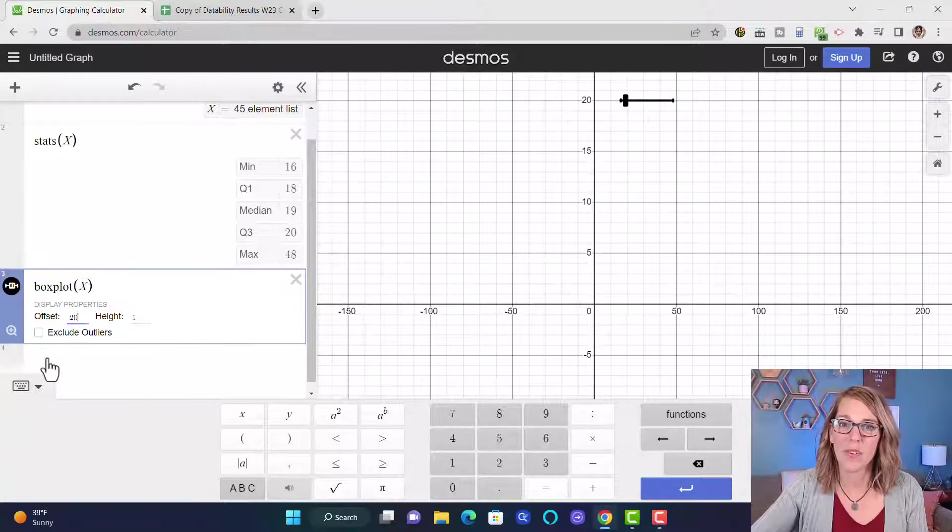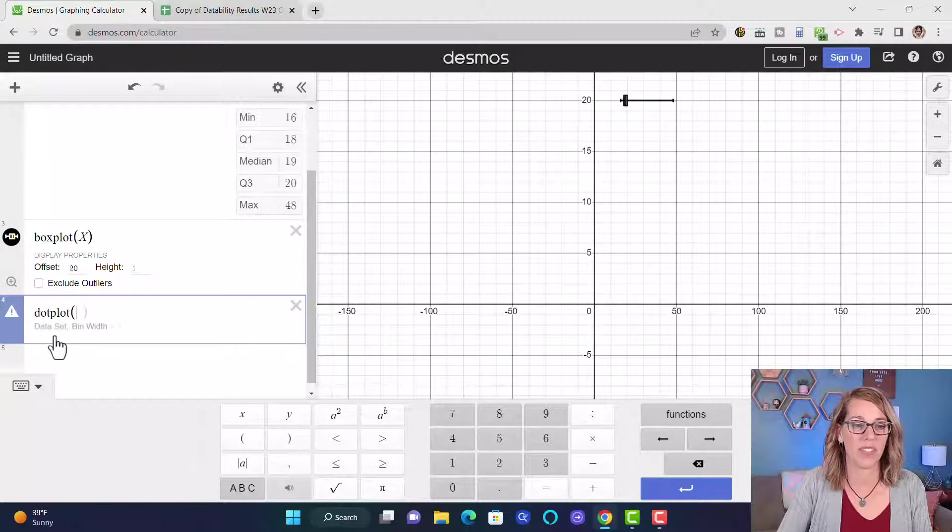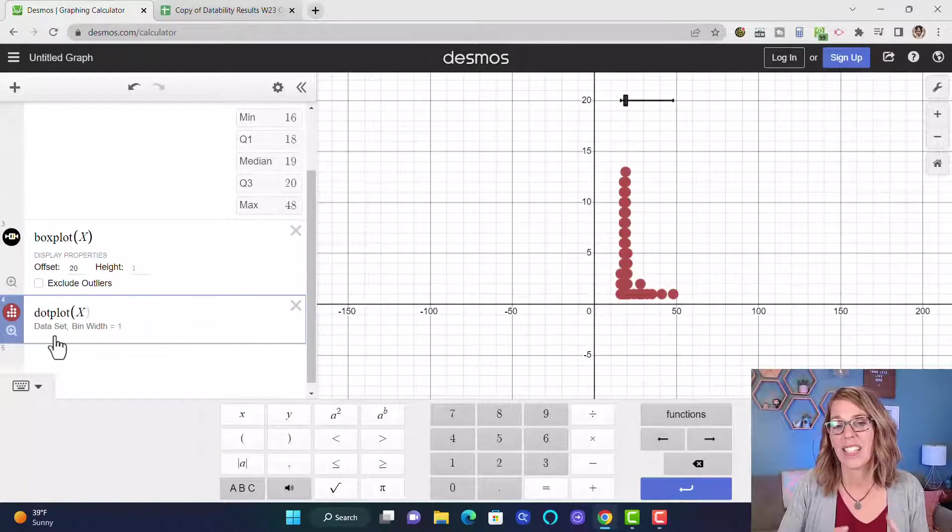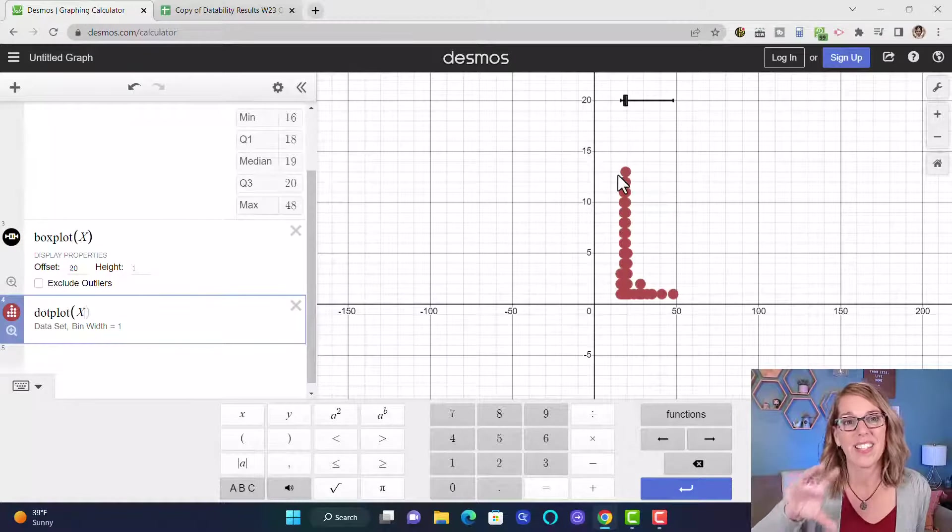Now I did this because I also want to do a dot plot. So I'm going to type in dot plot parentheses X, and then I can see how I've got my data underneath here. This isn't the best scale to display my data.